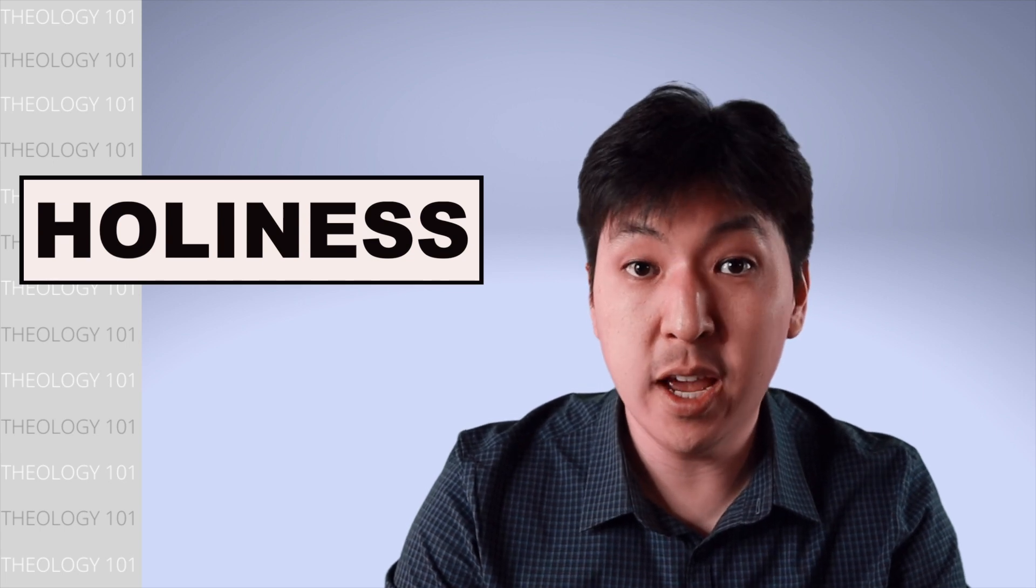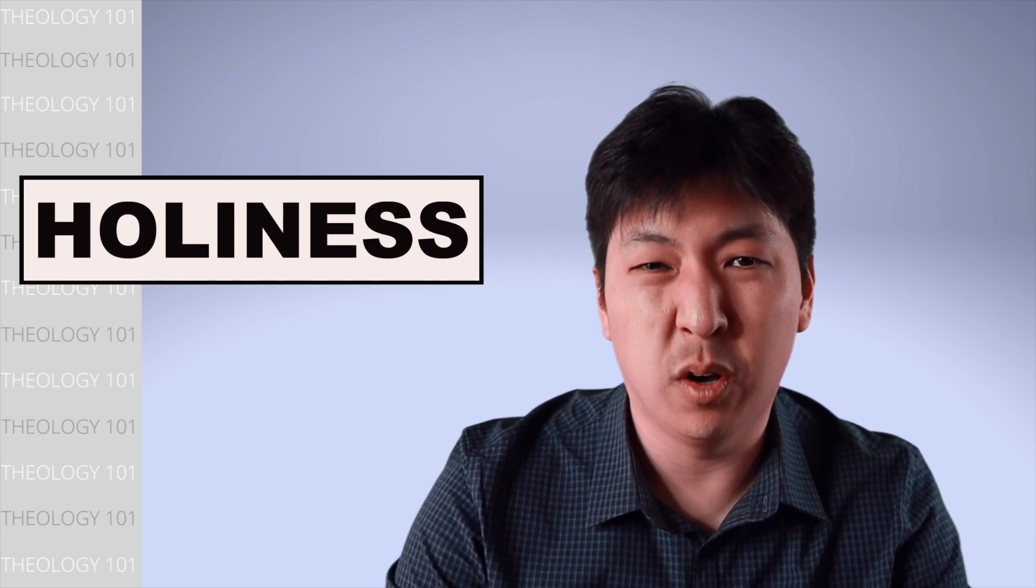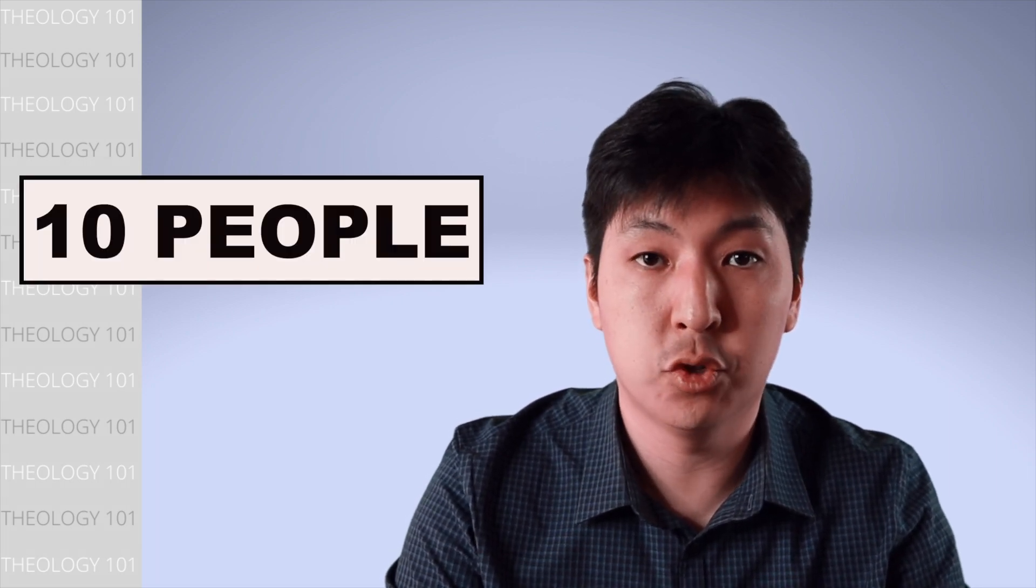And based on God's holiness, Abraham knows that God would never kill righteous people along with the unrighteous. So he tells God that He cannot destroy Sodom and Gomorrah for the sake of the righteous. God agrees with Abraham, and He says that if Abraham could even find just 10 righteous people, He won't destroy the cities. But we know that God ultimately did destroy Sodom and Gomorrah because there weren't any righteous people in that city.